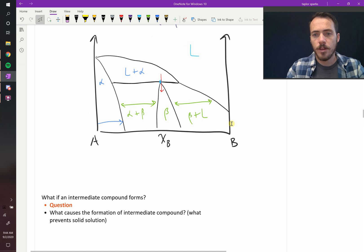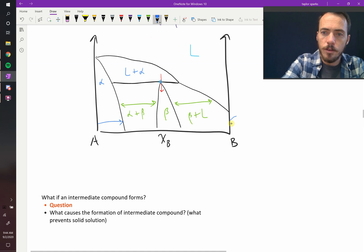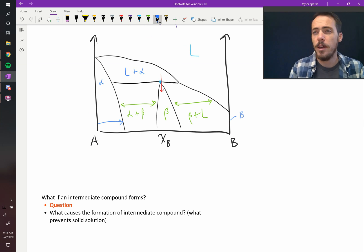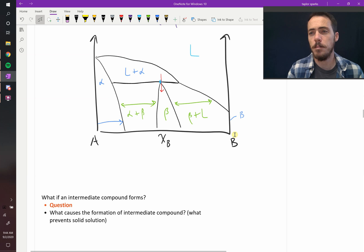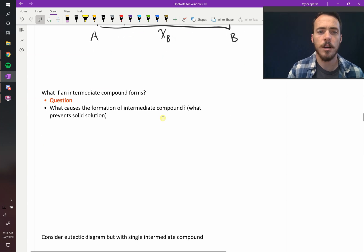But on this other side, you've got pure B right on this end over here. It does not allow any solubility of A in B. And then you have this funky compound that shows up in the middle. So what are these intermediate compounds and why do they form?